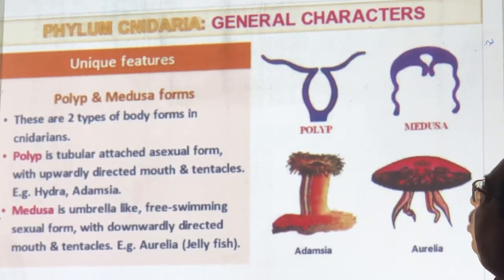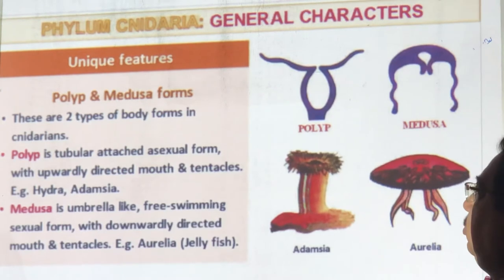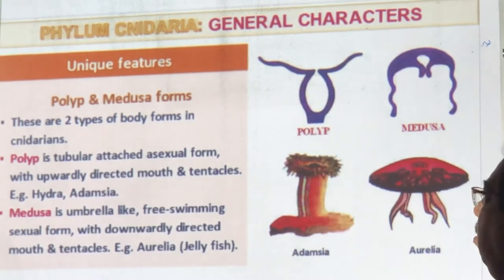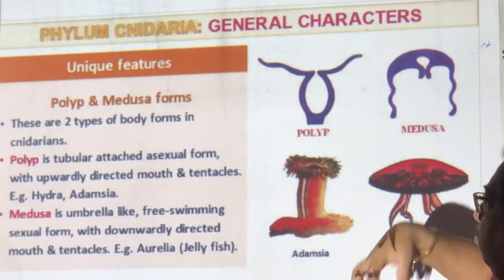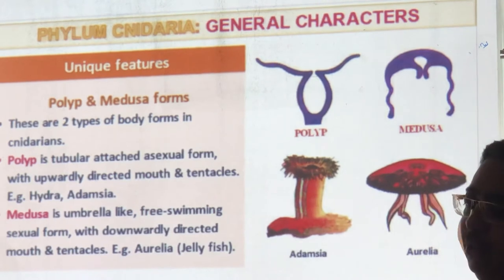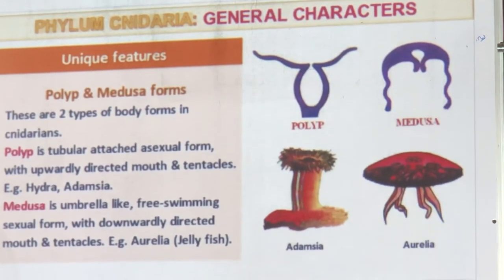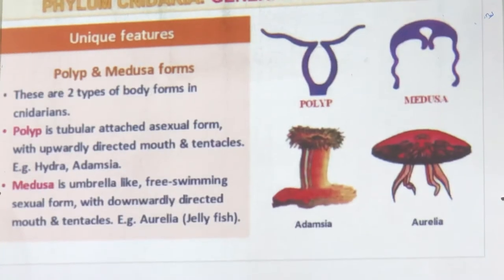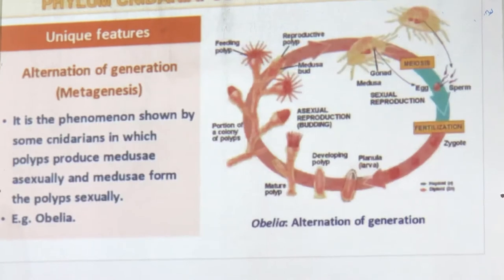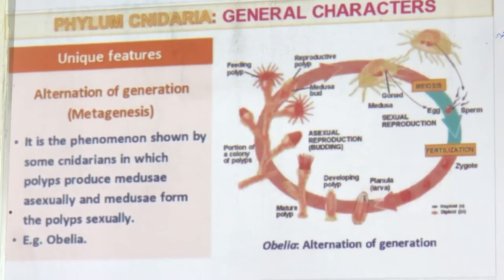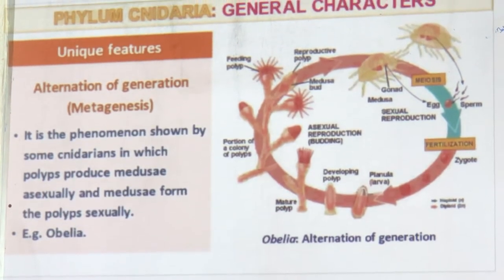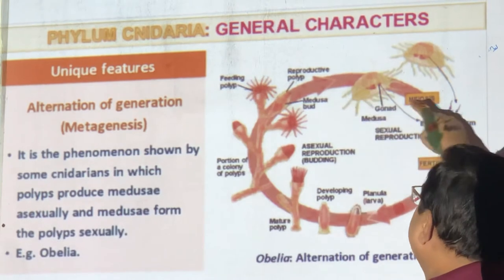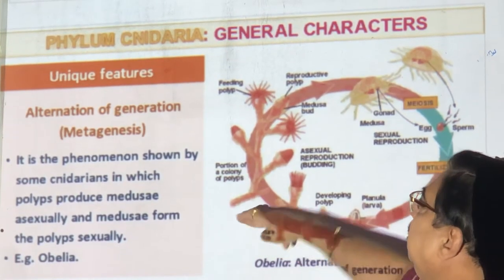Two forms are seen — polyp and medusa. Polyps such as Hydra and Adamsia are attached. Medusae such as Portuguese man-of-war and jellyfish are free-swimming with tentacles. They swim upside down, squirting water from their tentacles and moving in the opposite direction by action-reaction. Hydra can also slide and attach to twigs. Polyps produce medusa asexually (by budding), and medusa forms polyp sexually — this alternation of sexual and asexual generations is called metagenesis.